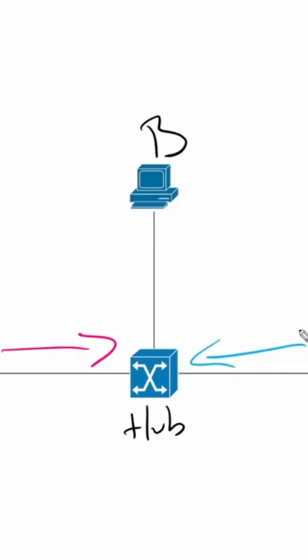So this is going to result in a collision. If we pretend here that this looks like a wave, we'll have a wave for A as well. These are going to collide.